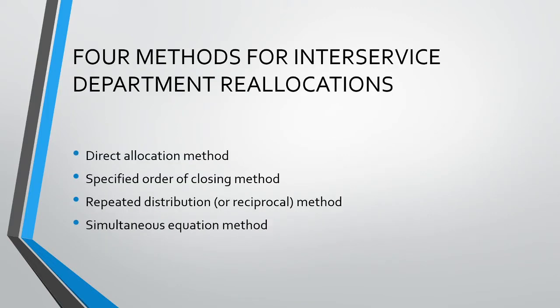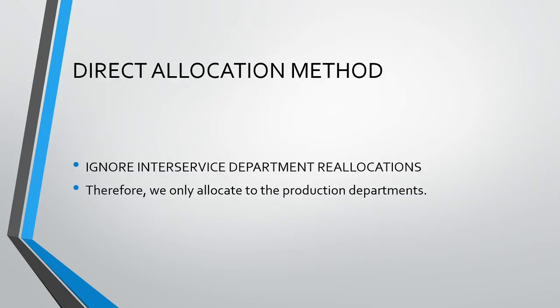For this reason, we have four methods for inter-service department reallocations: the direct allocation method, the specified order of closing method, the repeated distribution method, and the simultaneous equation method. When considering which method to use, we need to consider the extent of service department interaction as well as the cost and benefit of each method. In this video, we will focus on the direct allocation method, where we simply ignore the inter-service department allocations and allocate from service departments directly to production departments.